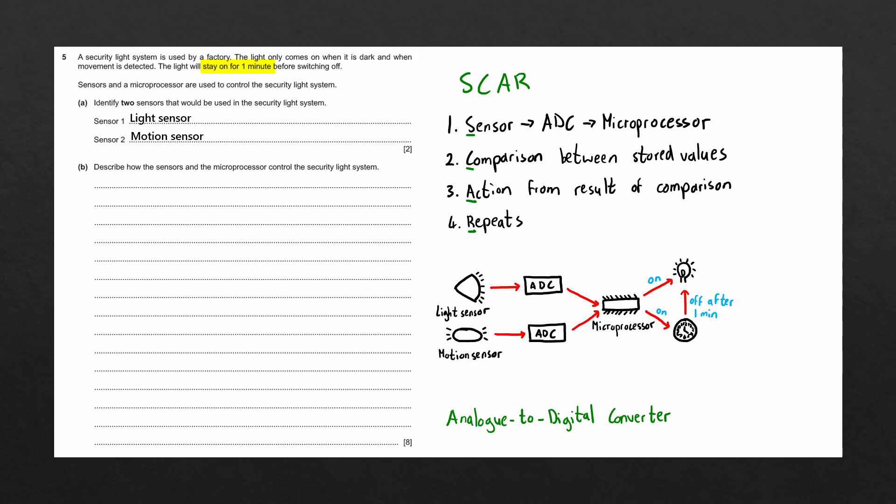Once the timer is complete, it will send a signal to the light to turn it off. Lastly, the system repeats. In other words, the sensors send data to the microprocessor continuously.